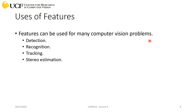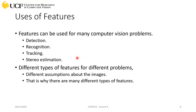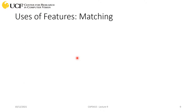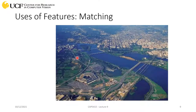We need features to solve many different problems in computer vision — for example, object detection, object recognition, tracking, and stereo estimation. For all the problems you'll solve, you need to represent your sample as a feature representation. Different problems require different types of features, which is why there are so many ways to extract them. Let's look at one simple example where features can be useful, starting with this input image.